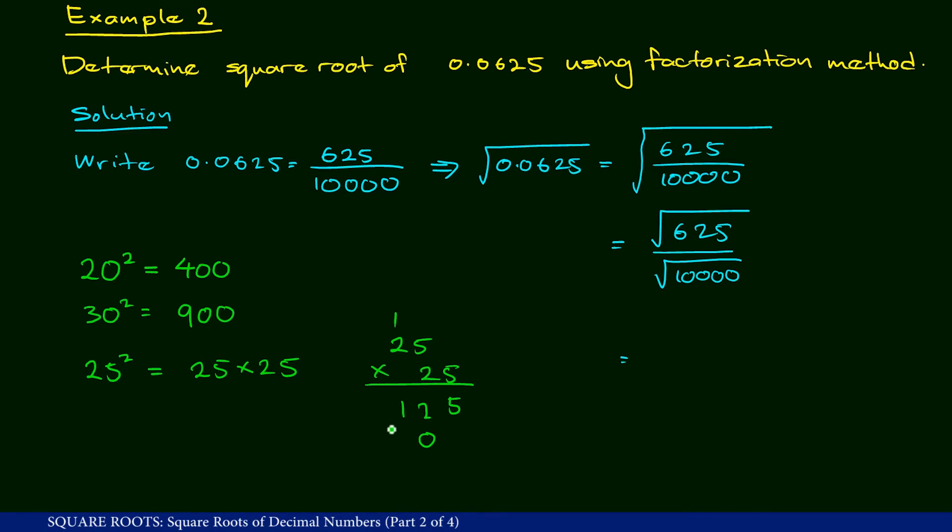And 2 times 2 is 4, and plus 1 becomes 5, so 50. So the answer is 625. So we've got the answer 625.